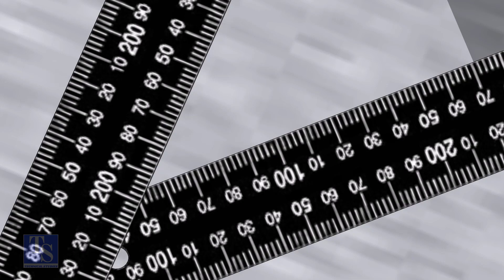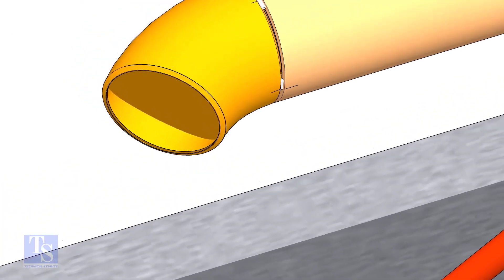Note down the readings. If both readings are the same, the elbow face is exactly 45 degrees to the pipe.